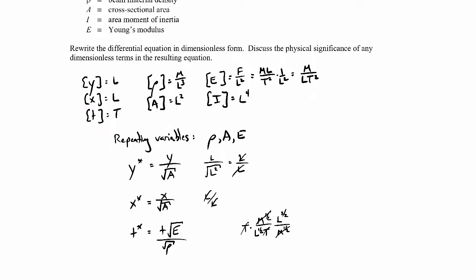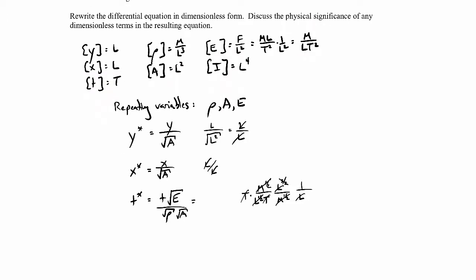That leaves a length to the three-halves in the numerator, so I'll divide through by the square root of the area — that's one over L — which gets rid of that final L. So the dimensionless time would be t times the square root of E over rho A: t* = t√(E/ρA).